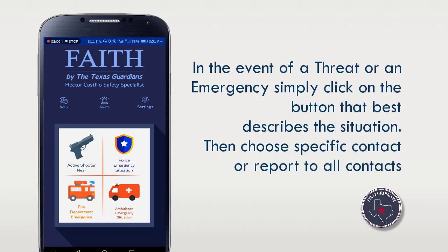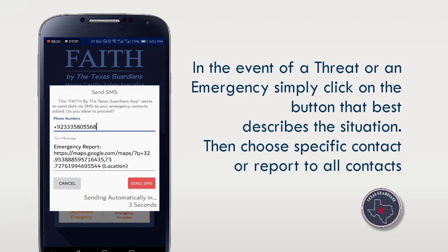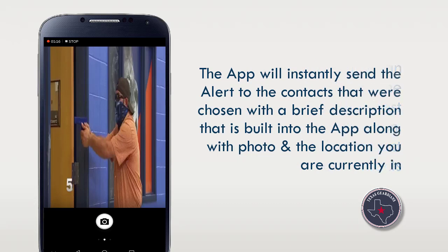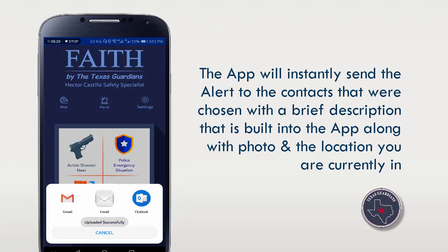In the event of a threat or an emergency, simply click on the button that best describes the situation. Then choose a specific contact or report to all contacts. The application will instantly send the alert to the chosen contacts with a brief description that is built into the app, along with a photo and the location you are currently in.